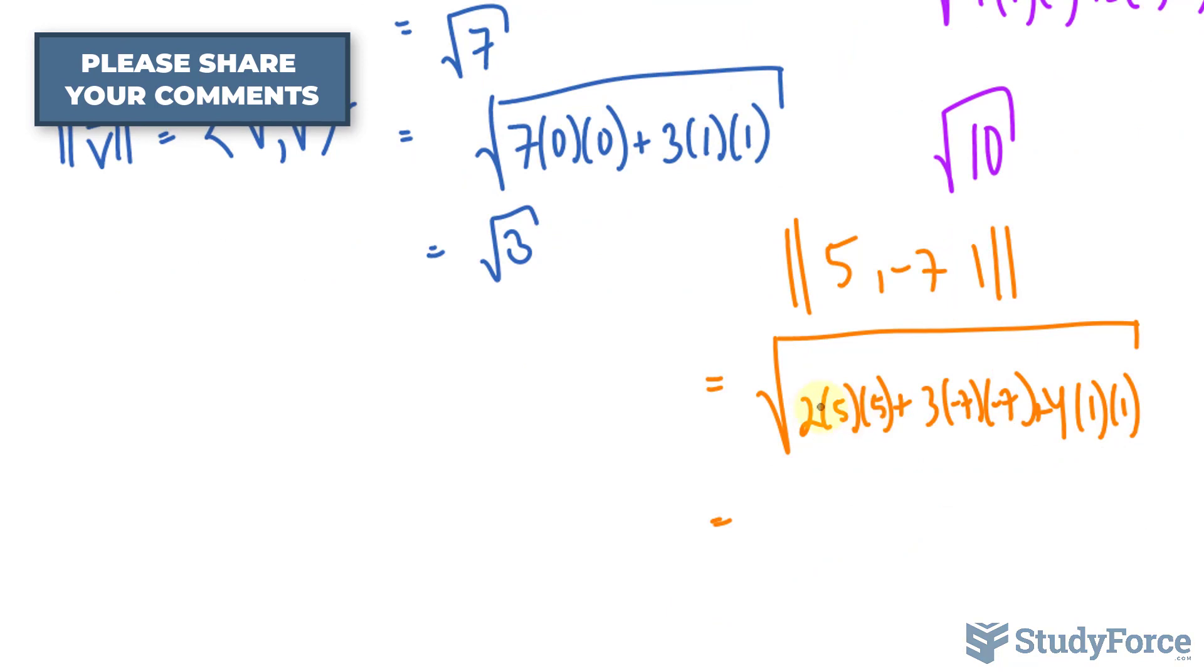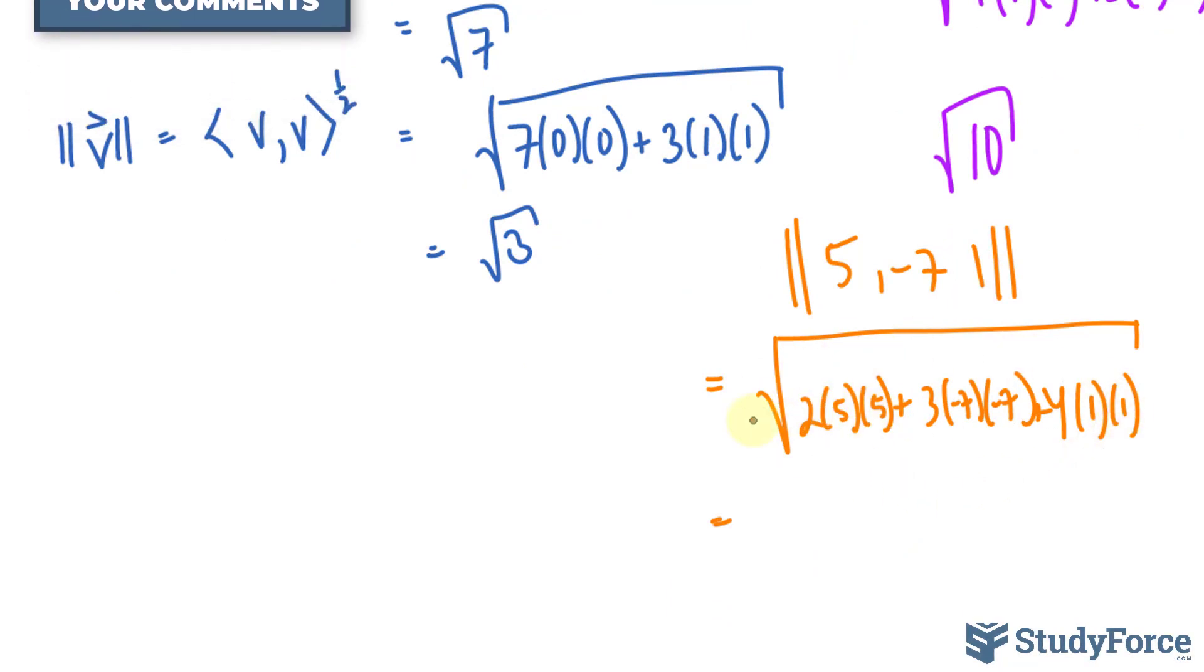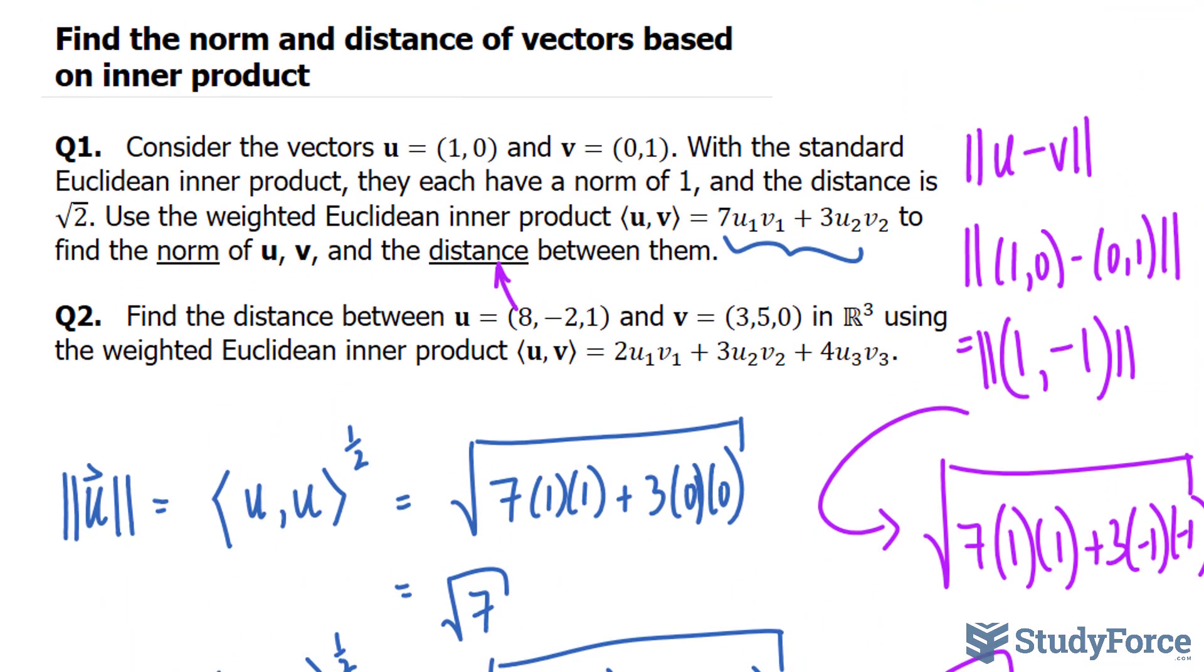So, to get the distance, we find the answer for the inside here, the radicand. You should end up with 201, and the square root of that represents the distance between u and v. And there you have it. That is how to find the norm and distance of vectors based on their inner product.